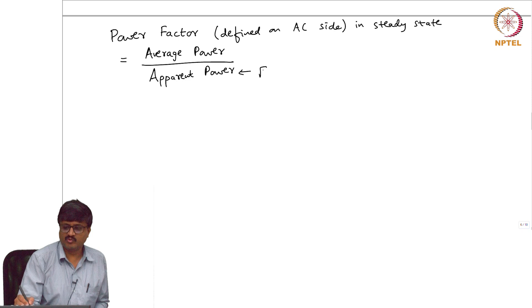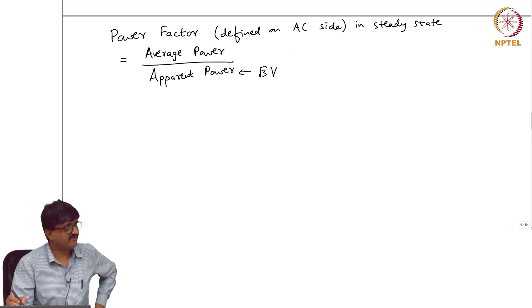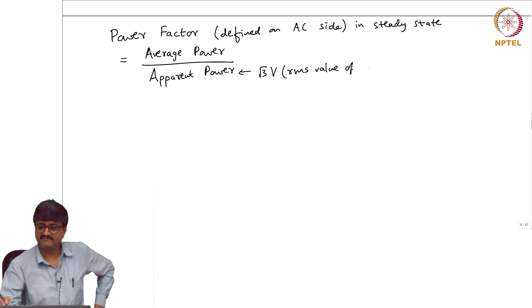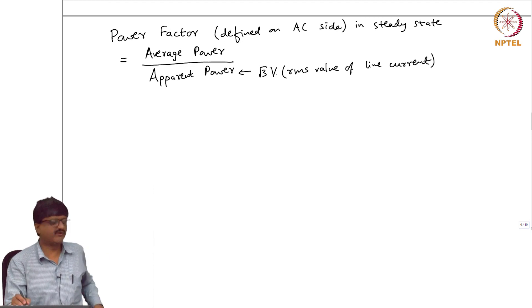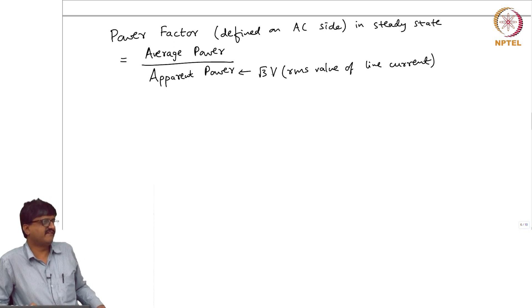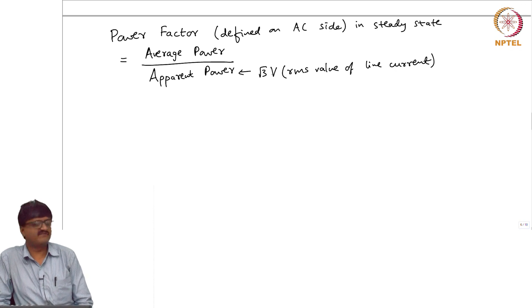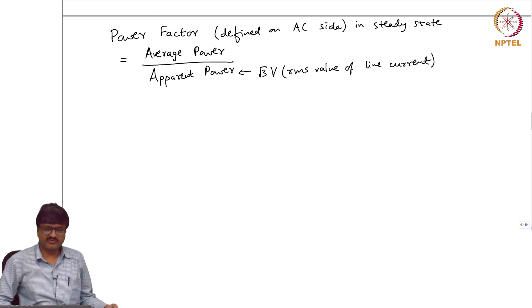Apparent power is root 3 times the RMS value of line to line voltage. V is the notation we use for RMS value of line voltage. So root 3 into the RMS value of line voltage into RMS value of line current. This is the definition that we use in steady state on the AC side.